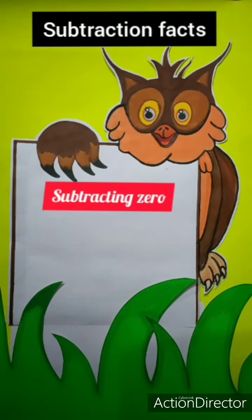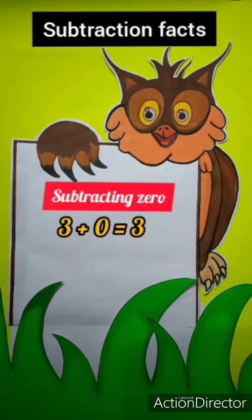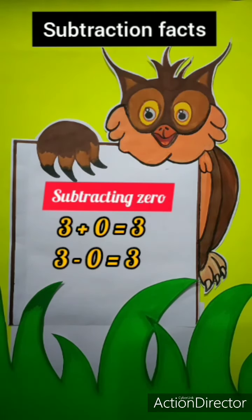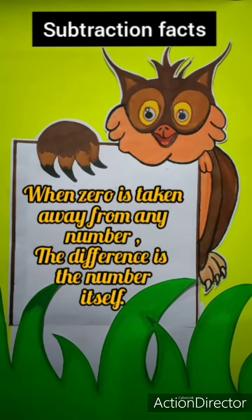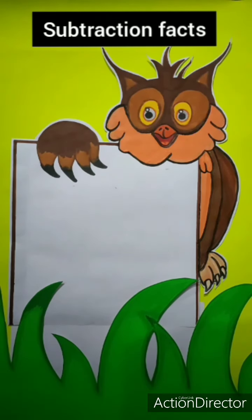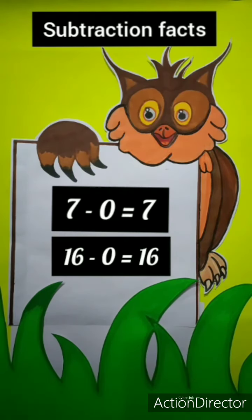The second subtraction fact is subtracting 0. As we have already done in addition, when we add 0 to a number we get the number itself. Similarly, when you subtract 0 from a number, the difference is the number itself, because 0 means nothing. For example: 7 minus 0 equals 7, and 16 minus 0 equals 16.